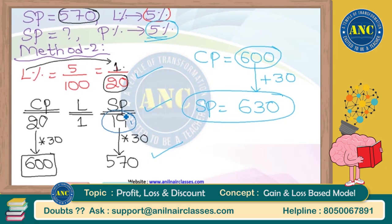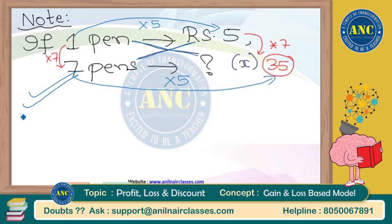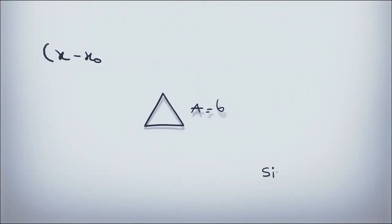Most of the questions in the examination will definitely have multiplying factors. If there is no multiplying factor, you know how to solve it — just cross multiply. I hope the idea of this question is clear for each and every student. Next question — some beautiful questions are going to come. I am very particular about today's class.